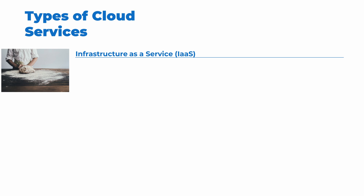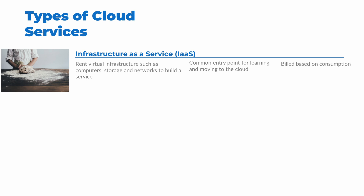There are three categories to define the types of cloud services. The first is infrastructure as a service, or IaaS, as it's commonly referred to. IaaS is the most basic type of cloud service. With IaaS, we rent virtual infrastructure such as computers, storage, and networking, and build our own services. This is similar to baking our own bread — we can get exactly what we want, but we have to do it ourselves. This is the most common entry point for learning and moving to cloud services because it's comparable to what most people are familiar with on-premises. IaaS is built on consumption, or based on what we use.